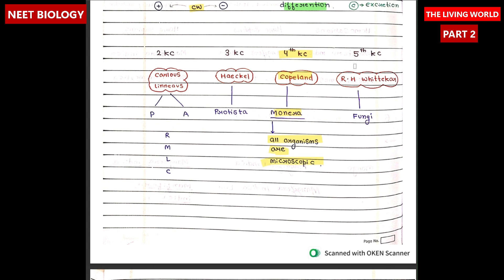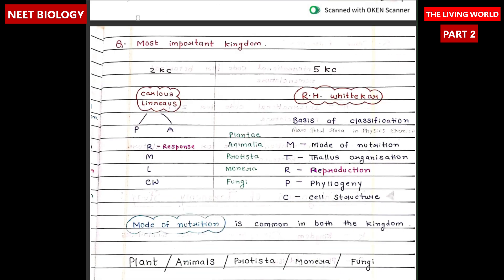The fifth kingdom classification was proposed by R.H. Whittaker in 1969. He categorized living organisms into five kingdoms: Monera, Protista, Fungi, Plantae, and Animalia. The most important kingdoms to note are the second kingdom classification and the fifth kingdom classification.